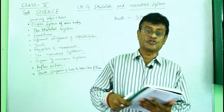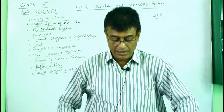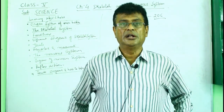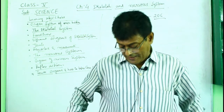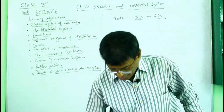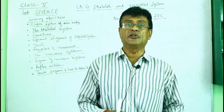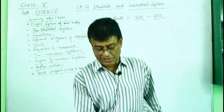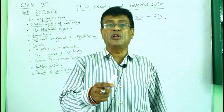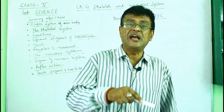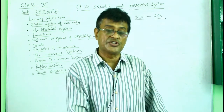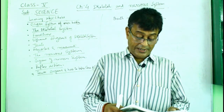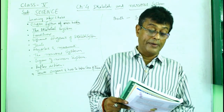In the leg, this is the hip girdle or pelvic girdle. From the pelvic girdle, two long bones go down known as the femur. Then there are two bones - one is tibia and the other is fibula. So femur, tibia and fibula. Like the humerus, the femur bone is also responsible for producing bone marrow.